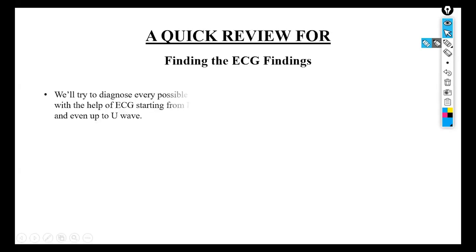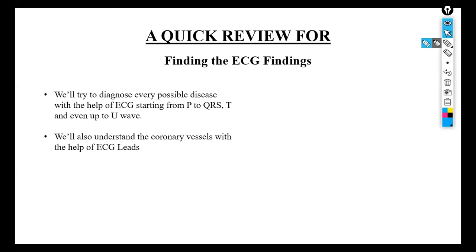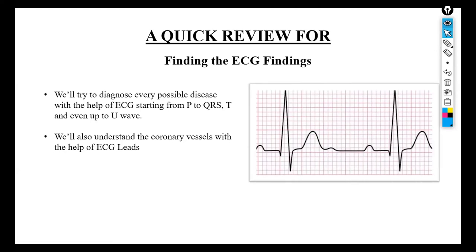Hello everyone, this is a quick review for finding the ECGs. Today we'll try to diagnose every possible disease with the help of ECG starting from P to QRS complex, the T and even up to the U wave. We'll also understand the coronary vessels with the help of ECG, like how we can find out which area of the heart has undergone myocardial infarction. A quick review: the P wave shows atrial depolarization, the QRS complex shows ventricular depolarization and masks atrial repolarization, the T wave shows ventricular repolarization, and in rare cases we have the U wave, which mostly occurs due to hypokalemia.